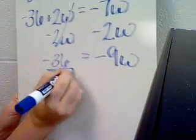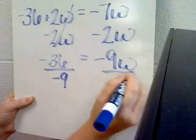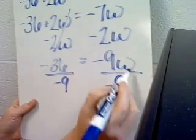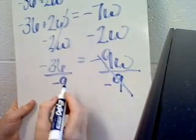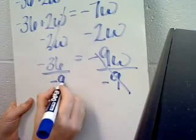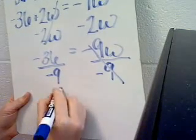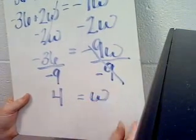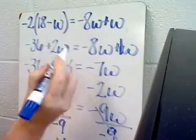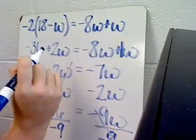I'm going to divide both sides by negative 9 in order to isolate the variable. Negative 36 divided by negative 9 will give you positive 4. And that is the value for w that would make the two sides of the equation equal.